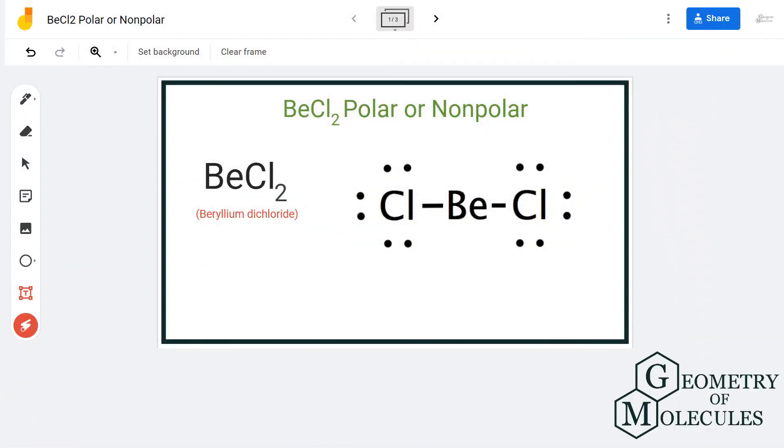Hi guys, in this video we are going to determine the polarity for BeCl2 molecule. It's the chemical formula for beryllium dichloride. To determine the polarity of this molecule, we will first go through its Lewis structure.